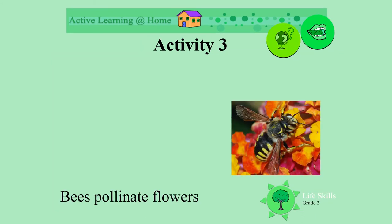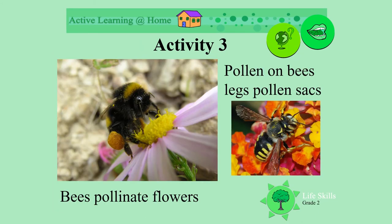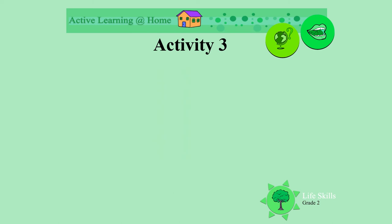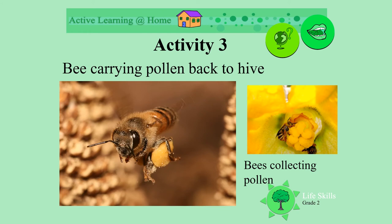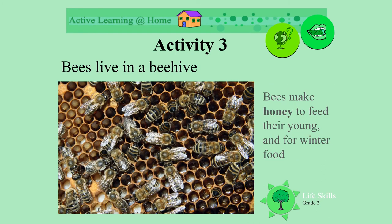Look at the bees pollinating the flowers. The pollen goes onto their legs — look at the pollen sacks full of honey, the big yellow ball on the bee's leg. Look at the bee collecting the honey. They carry the pollen back to their hives. This is hard work to feed their young.